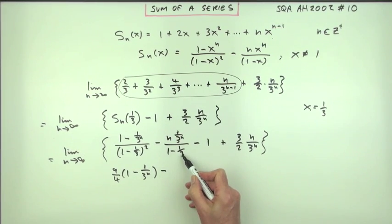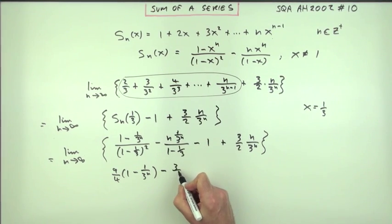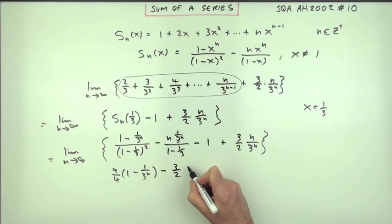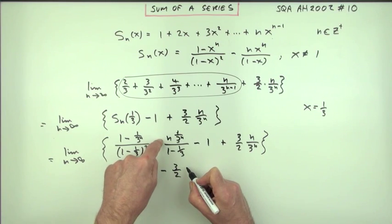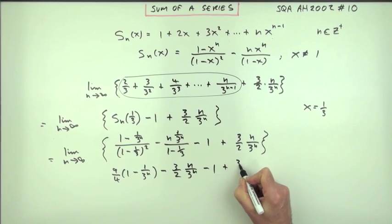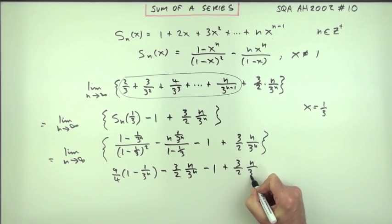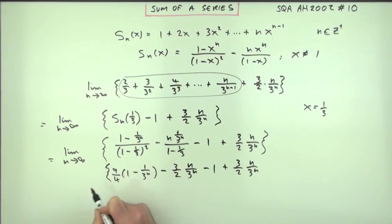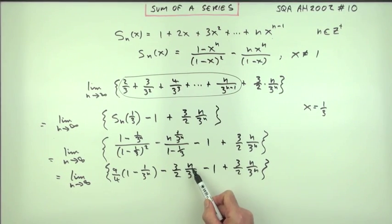Let's tidy up this term here. One minus a third is two thirds, square it is four ninths, you're dividing by it so it will be nine upon four times that, so that will be nine upon four times one minus one over three to the n, minus one minus a third is two thirds, you're dividing by two thirds so multiply by three upon two, so minus three upon two times I'll just rewrite that with the n on top of that, n over three to the n minus one, plus three upon two n over three to the n.